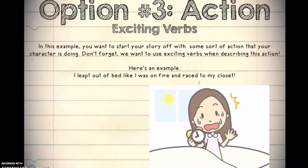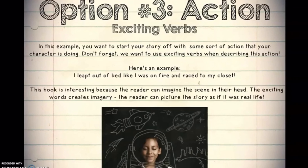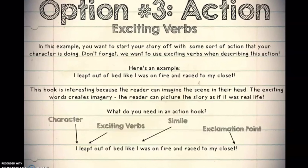I leapt out of bed like I was on fire, and I raced to my closet. Right away, as someone who's visualizing this, you're thinking, 'Oh gosh, what's happened here? Did she oversleep? Is she worried that she's going to be late for school? Does she have an important event that she needs to get to?' It's causing you to think, why is this action so important?